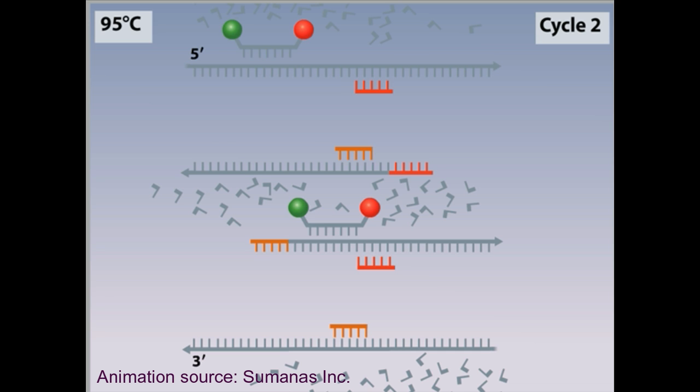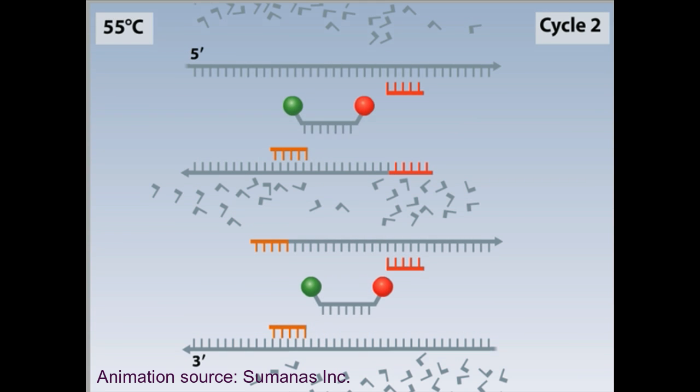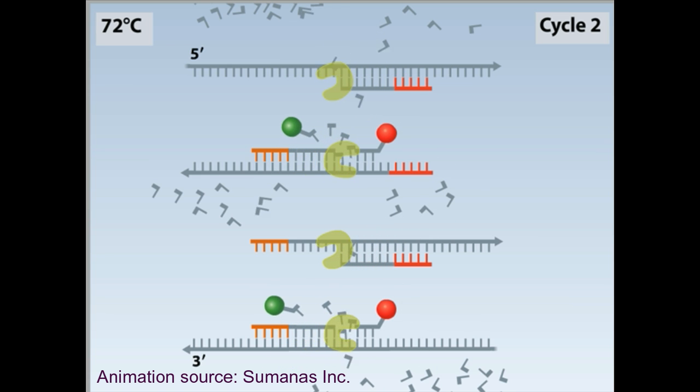As the reaction proceeds, the reporter dyes are liberated into the solution. The next fluorescence measurement picks up the fluorescence from both PCR cycles.